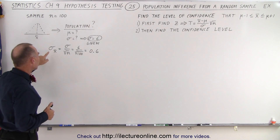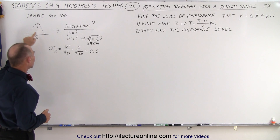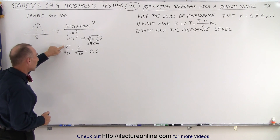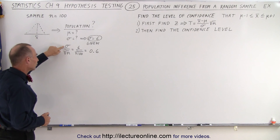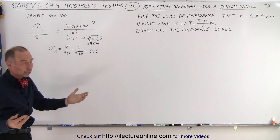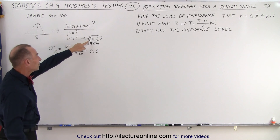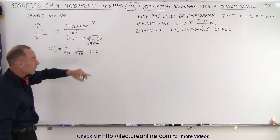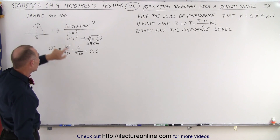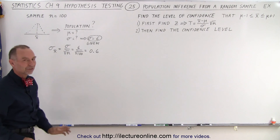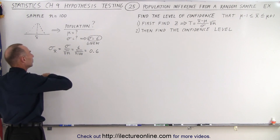What we're going to do is compare the standard deviation of the sample to the standard deviation of the population by saying it's equal to the standard deviation of the population divided by the square root of the sample size. In this case, if we assume that the standard deviation is six, we divide that by the square root of the sample size which is a hundred, so we get 0.6 for the standard deviation of the sample.